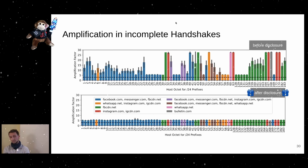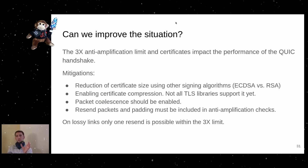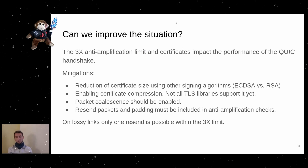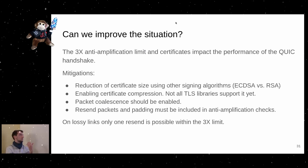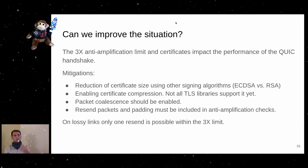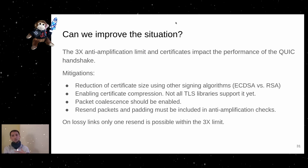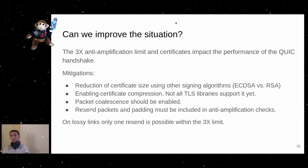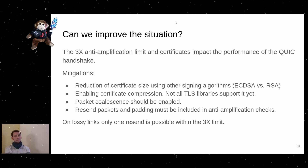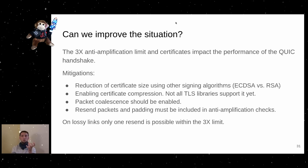To improve this situation: use a better signing algorithm, enable certificate compression, and account for retransmitted packets in anti-amplification checks. When a client stops responding, the server assumes packet loss and resends — but those bytes must also count toward anti-amplification limits. Facebook likely did not account for this. On lossy links, even small certificates may allow only one retransmission before hitting the three-times limit.